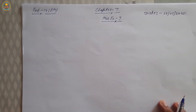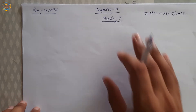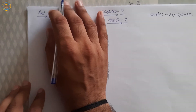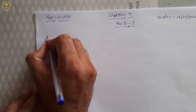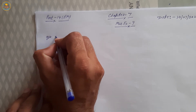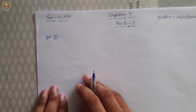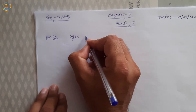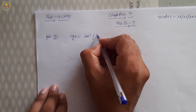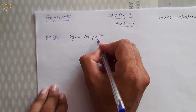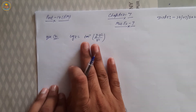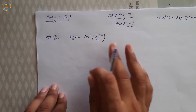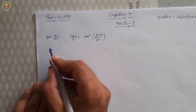Good morning dear students, welcome to online classes of mathematics. Next question from the miscellaneous exercise: Question number 7 — log x is equal to 10 inverse of (y minus x²) upon x². Find the value of dy by dx.